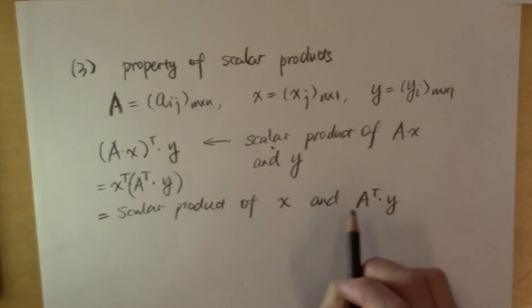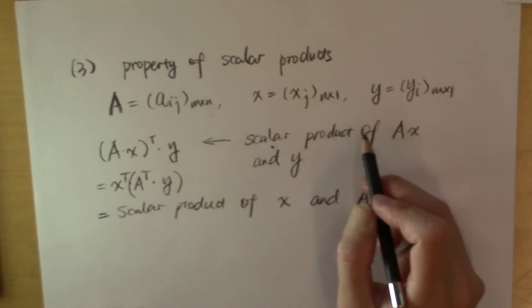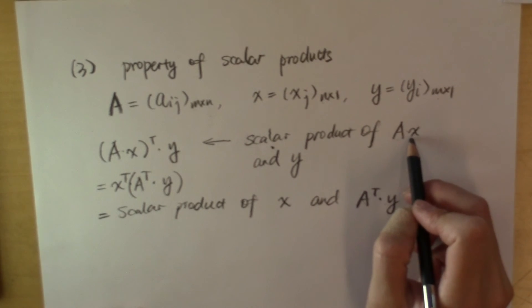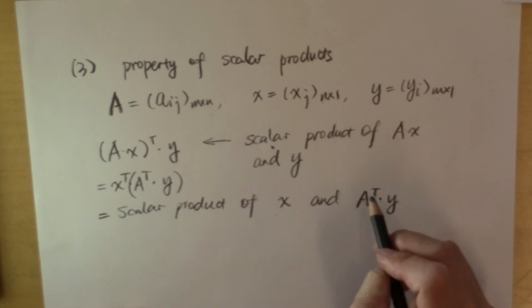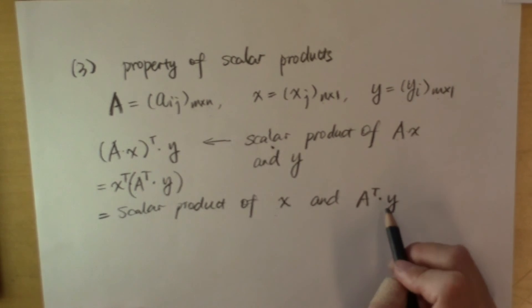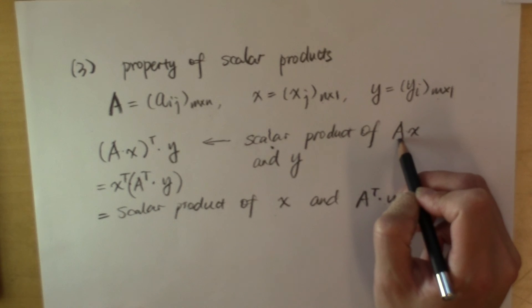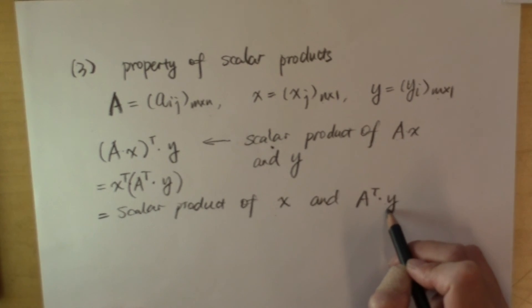Both are of dimension N by 1. So the scalar product of A times X and Y is equal to the scalar product of X and A transpose times Y. Basically we have shifted this matrix A to the other side.